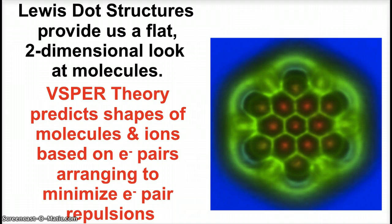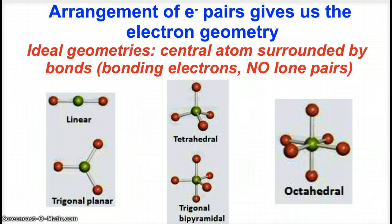Electrons are negatively charged and like charges repel each other. When you have these domains or regions of electrons around a central atom in a molecule, they're going to place themselves at the furthest distances possible, at the most favorable bond angles, for that molecule to be at the lowest energy state. The arrangement of electron pairs gives us the electron geometry, which we call the ideal geometries.